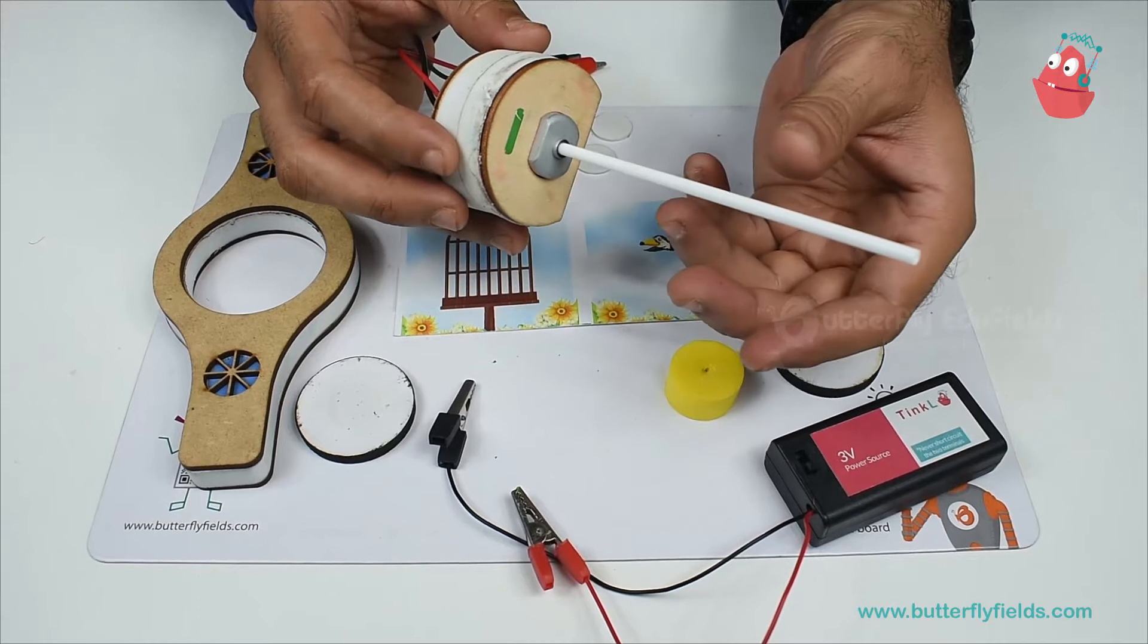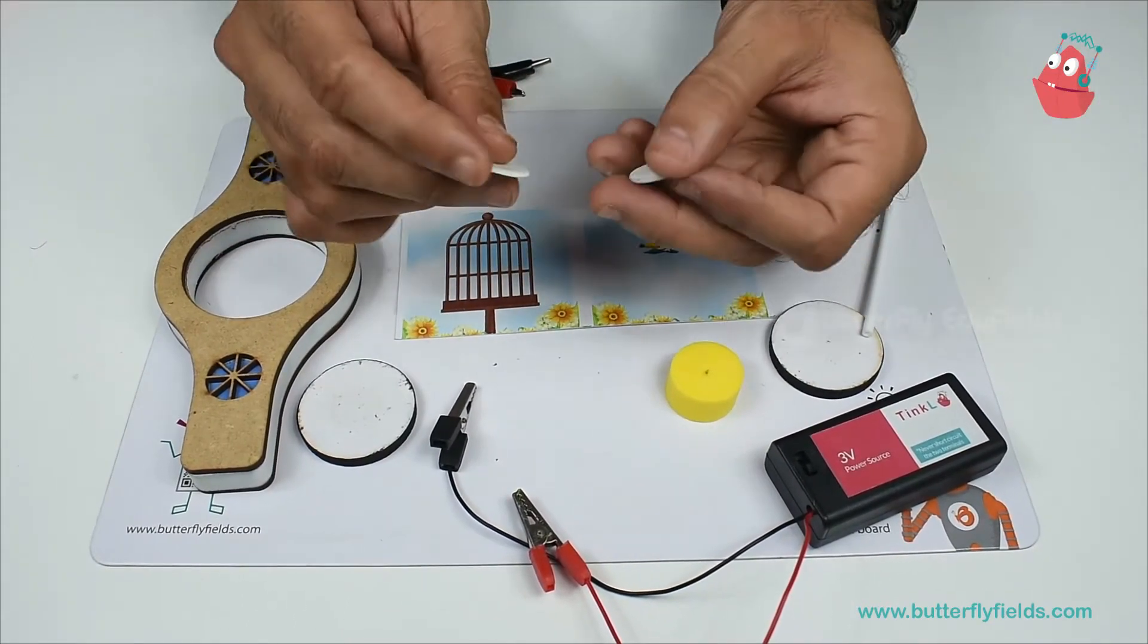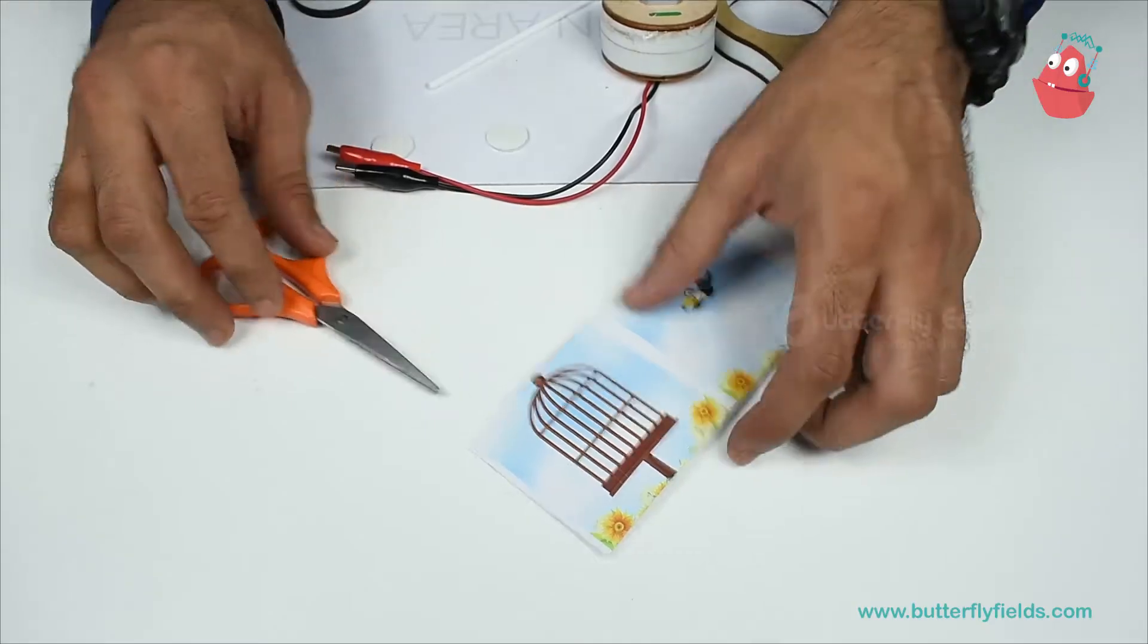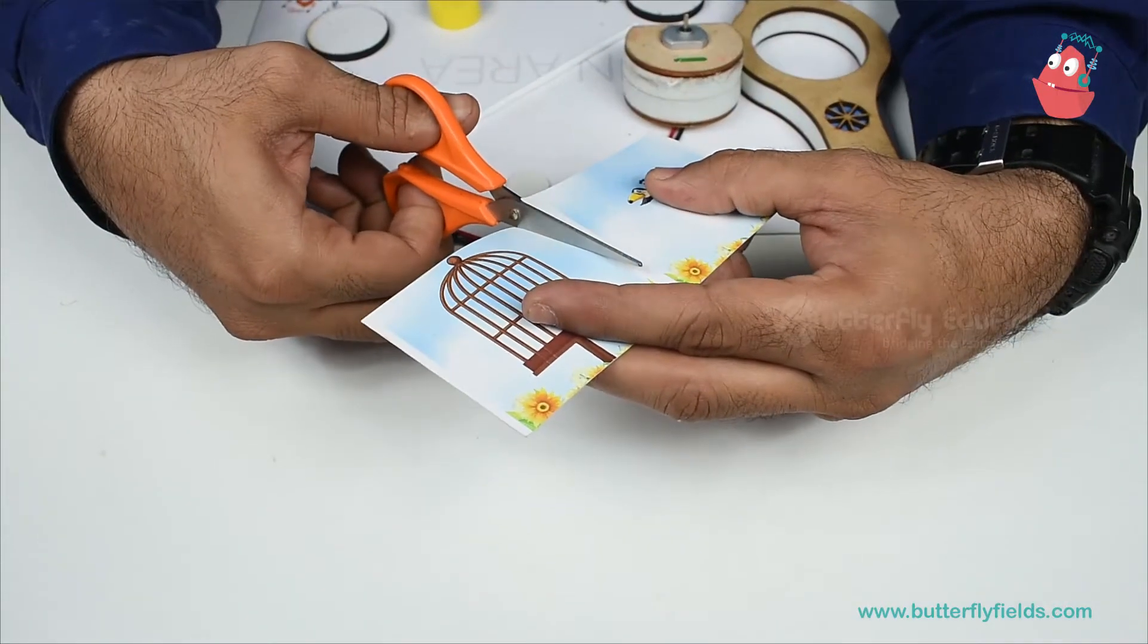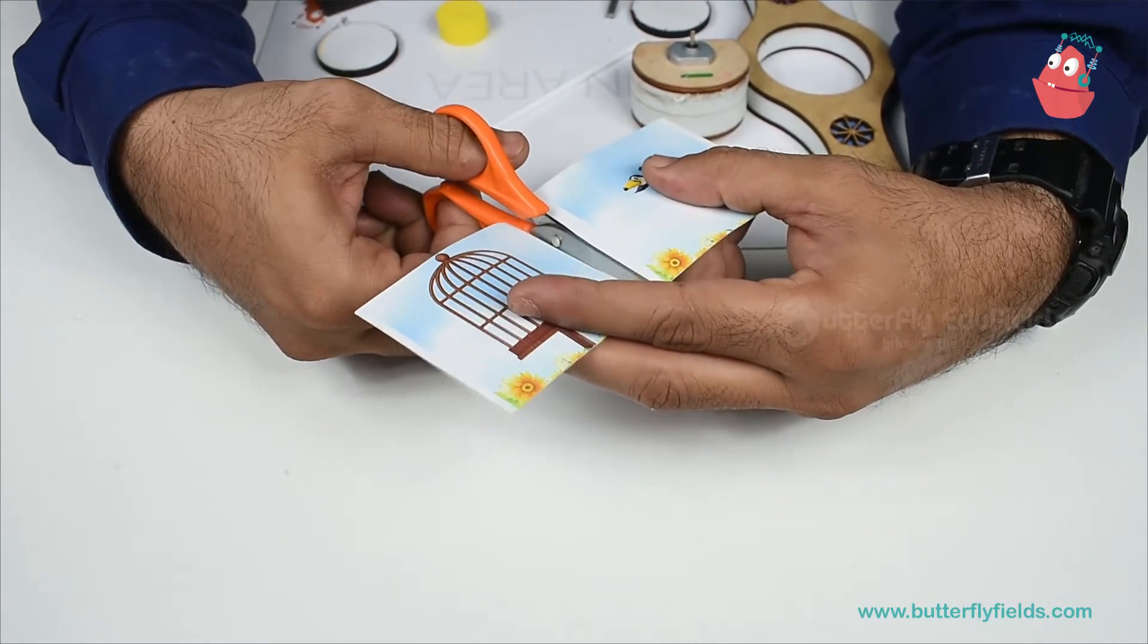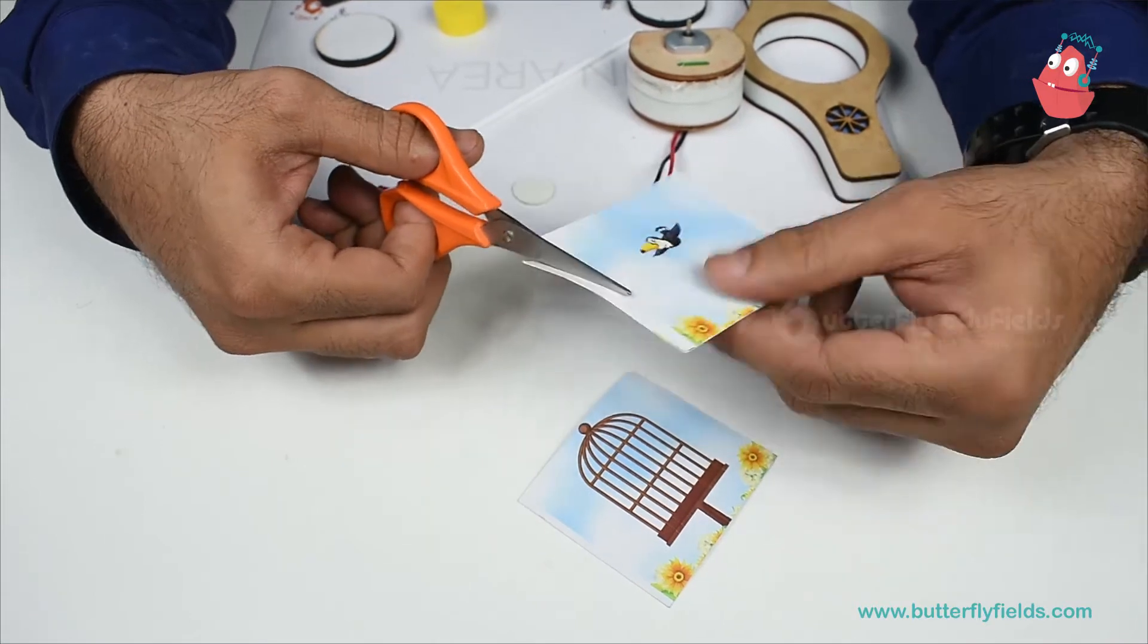The straw fits into the motor axle. I also have double-sided tape. Let's start. First step: I'll cut the cage and the bird out separately. You can also take out the white line.